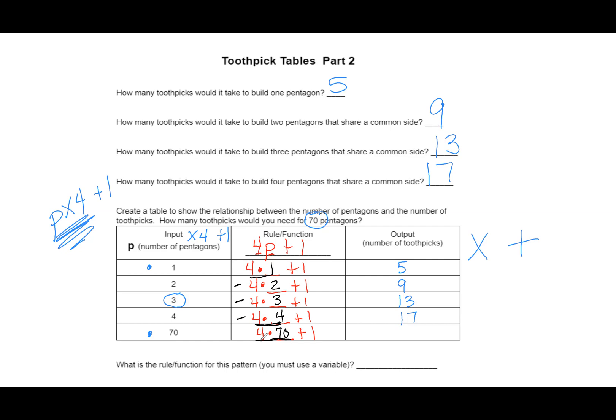And here we go on this last one, 4 times 70. Well, I know 4 times 7 is 28. And I'll put that little 0 on the back for this 0 back here. We'll add the 1 to it. 281 toothpicks it would take to make 70 pentagons. I sure don't have 281 toothpicks. So thank goodness for function rules. It makes it so much more helpful. So what is the rule or function for this pattern? And we have to use the variable. We already did it up here, but it is 4P plus 1. And you could put equals output. You could leave it alone. Sometimes they'll even give you a variable for this output that you can use. And that's how we do two-step function tables.